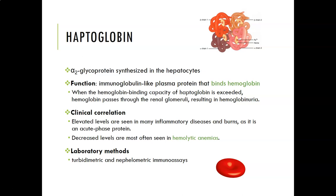Elevated haptoglobin levels are seen in many inflammatory diseases and burns — it is an acute phase protein, so it goes up with inflammation. Decreased levels are indicative of hemolytic anemia because it is all being used up soaking up hemoglobin released as red cells are broken down. The lab method is turbidimetric or nephelometric assays, and haptoglobin is a useful test when you suspect a hemolytic process like a transfusion reaction.